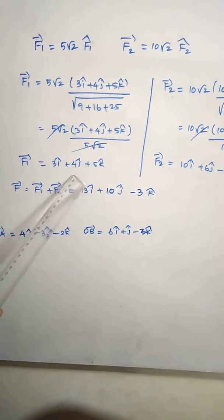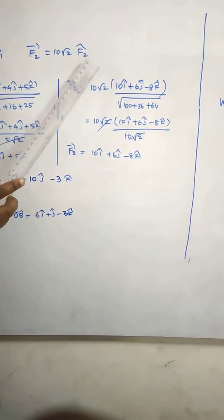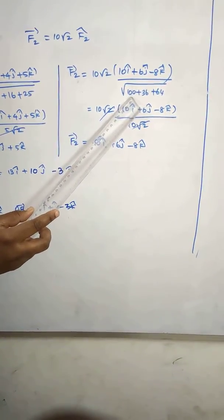F1 vector is equal to 3i plus 4j plus 5k. Then F2 vector is equal to magnitude into F2 hat, another thing is divided, direction vector by modulus.